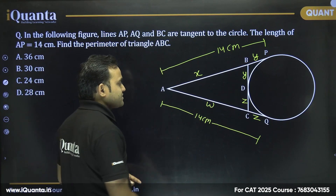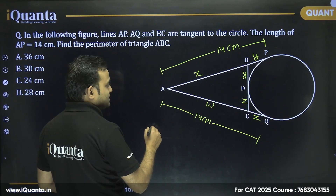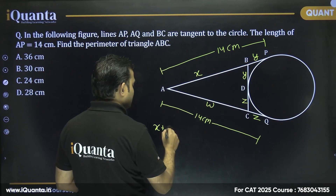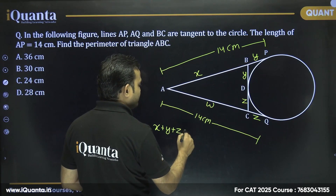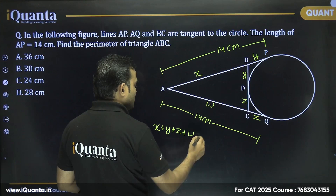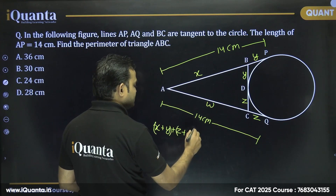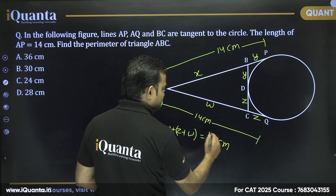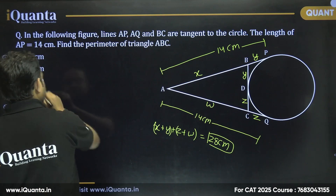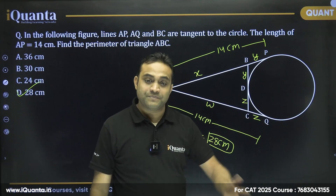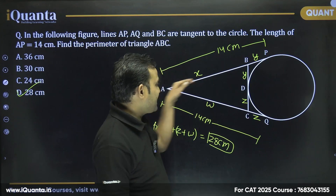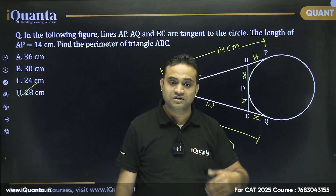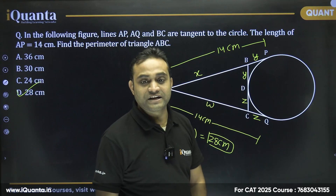The perimeter of triangle ABC equals AB + BC + AC = x + (y + z) + w. Now x + y = 14 and z + w = 14, giving a total of 28 centimeters. Our answer is option D. In these situations, you can simply remember that if tangent AP is given, the perimeter of triangle ABC is just twice AP — that is, 14 × 2 = 28 centimeters.